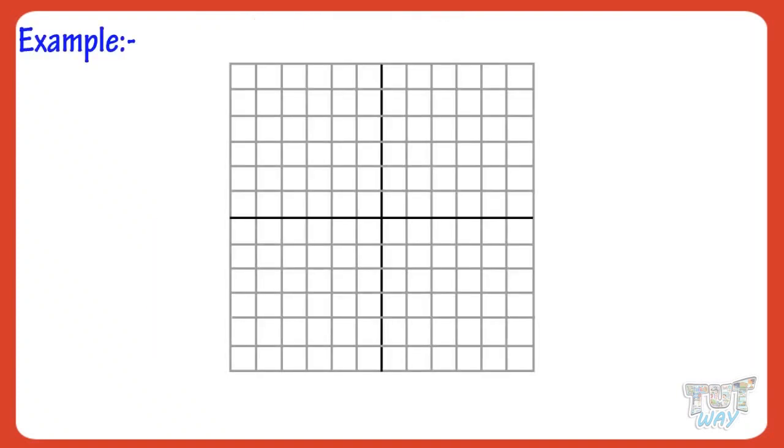Here we have a capital letter F. We have to translate this shape 2 squares up and 4 squares right. Remember, translation is always moving the object along a straight line like sliding. First mark the point where you want to move your shape to.